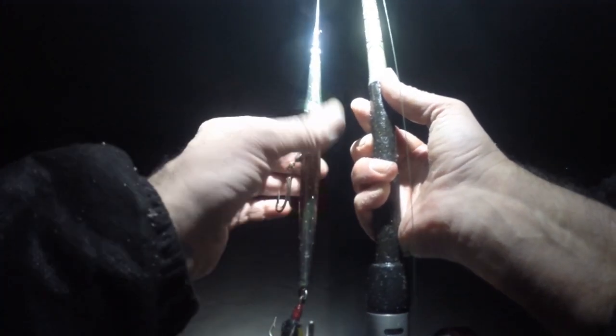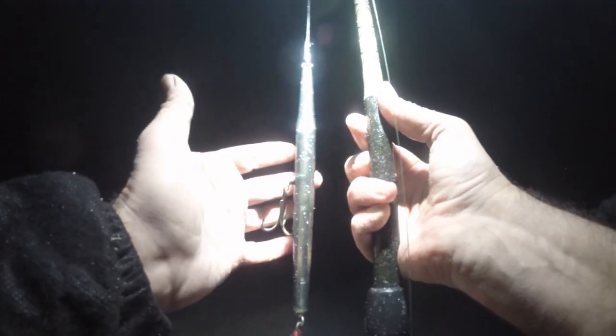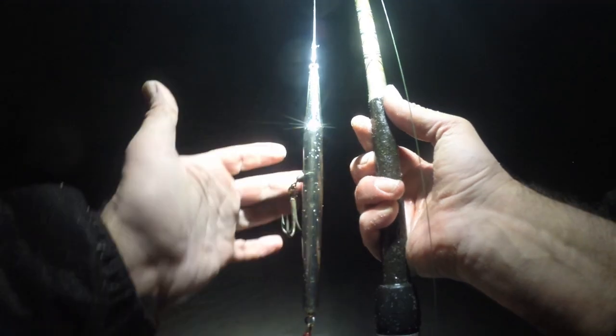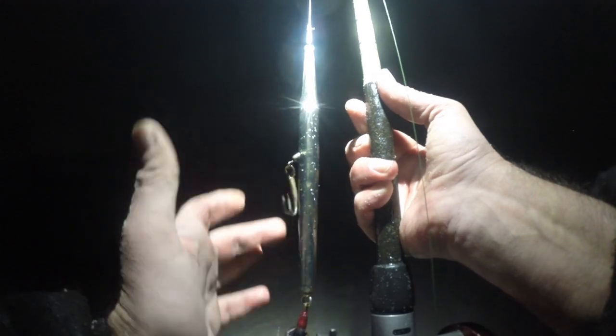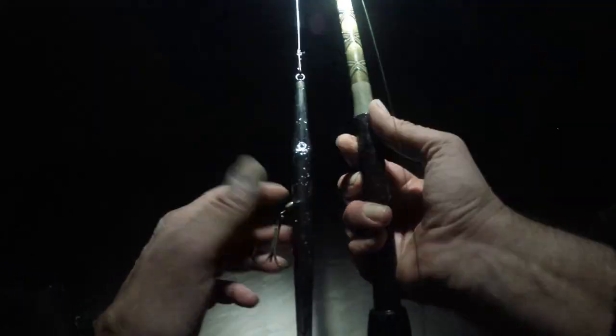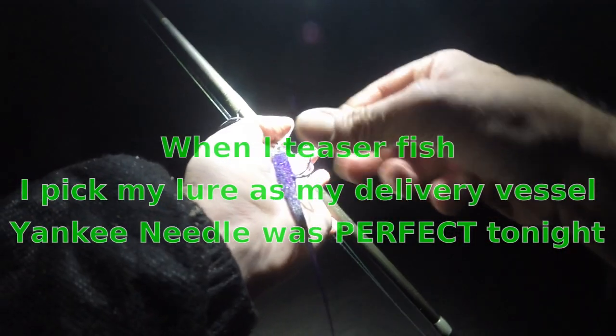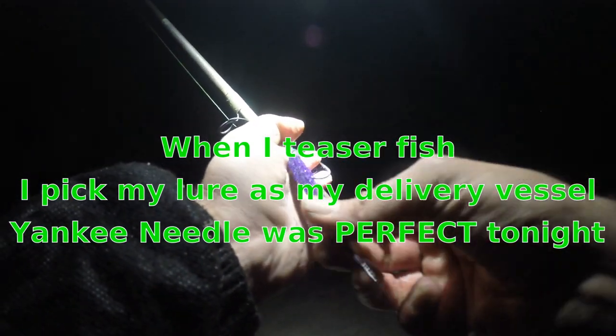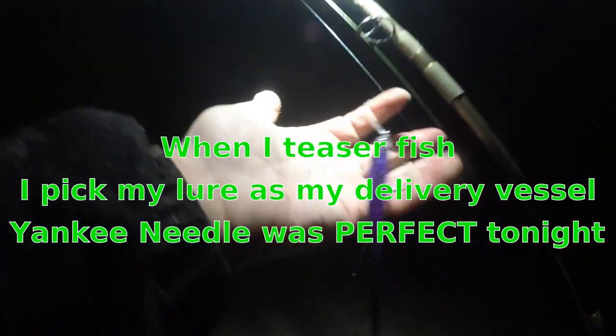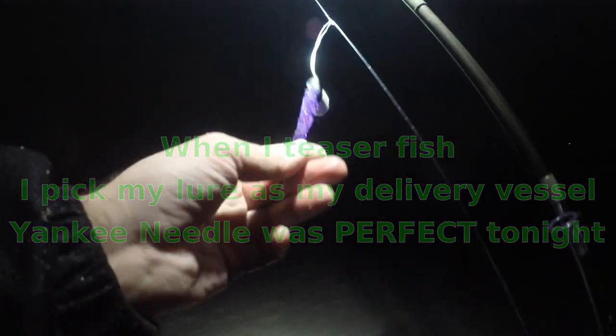This is an old Yankee needle. I haven't used this in a while, but it came to mind and I'm going to be throwing this most of the night. I'm going to see if I can connect with it. Of course, I'm going to be throwing a teaser in front. I'm expecting to get most of my fish on this. I'm just warming up here. That's a purple. It's just the same as black. I think they just see in shades anyway.